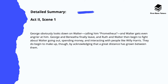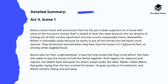George obviously looks down on Walter, calling him Prometheus, and Walter gets even angrier at him. George and Benita finally leave, and Ruth and Walter then begin to fight about Walter going out, spending money, and interacting with unsavoury characters like Willie Harris. They then make up, however, by acknowledging that a great distance has grown between them. Mama comes home and announces that she's put a down payment on a house with some of the insurance money. Ruth is elated to hear this news because she too dreams of moving out of their tiny apartment and into a more respectable home.